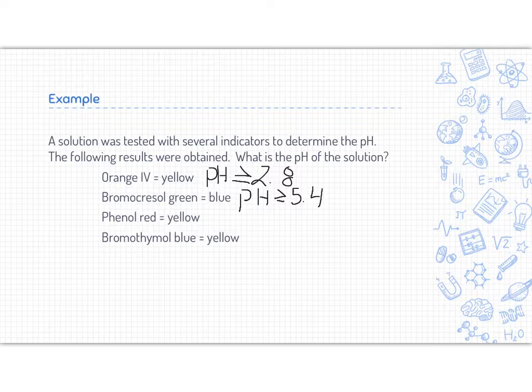Continuing on, phenol red is yellow when the pH is less than or equal to 6.6. So we can't go too high on our pH scale. This cannot have a pH of 8. That would be incorrect. Bromothymol blue is yellow. Bromothymol blue is yellow when the pH is less than or equal to 6.0.